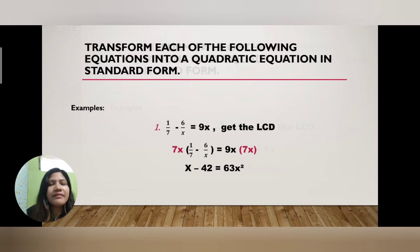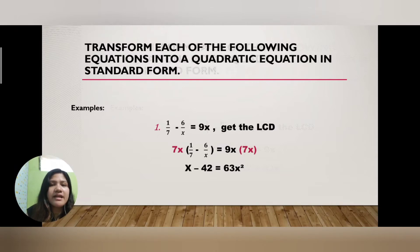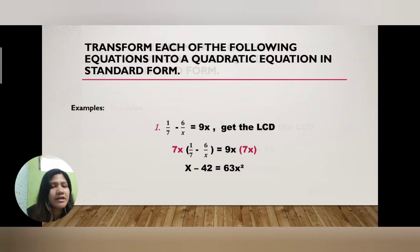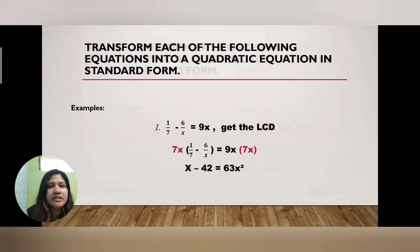Copy the operation minus, then proceed to 6/x: 7x times 6/x — the x's cancel leaving 7, then 7 times 6 is 42. So we have x − 42 on the left. On the right side: 9 times 7 is 63, and x times x is x², giving us x − 42 = 63x².